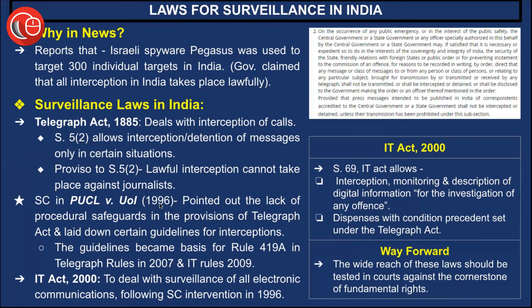The Supreme Court in the case of PUCL versus Union of India in 1996 pointed out the lack of procedural safeguards in the provisions of the Telegraph Act and laid down certain guidelines for interceptions. The problem is not lack of laws but rather poor or unlawful implementation. These guidelines became the basis for Rule 419A in the Telegraph Rules in 2007 and also the Information Technology Rules of 2009.